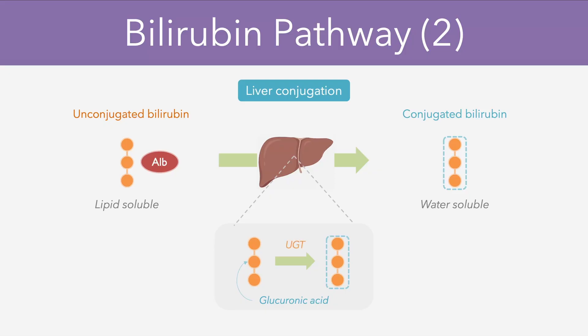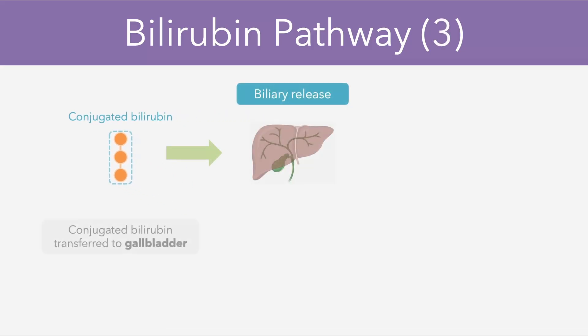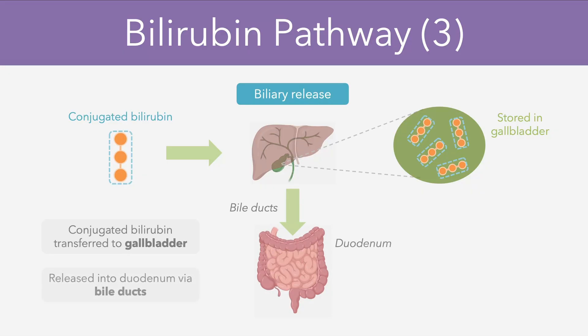From this point, the conjugated bilirubin molecules which are formed are transferred to the gallbladder for storage. If we were to take a closer look at the gallbladder at this stage, we would see that it carries multiple bile salts as well as the molecules of conjugated bilirubin. Once the bile is ready for release, these molecules of conjugated bilirubin are transferred via the bile ducts where they reach the duodenum of the small intestine. This step of release is quite important because it allows the bilirubin to enter the gut for further breakdown.